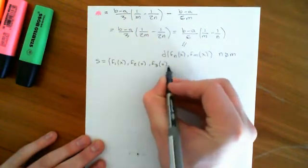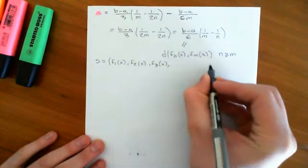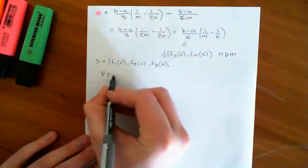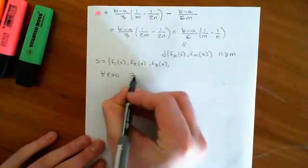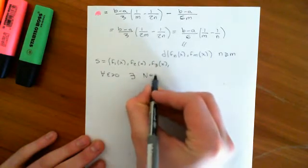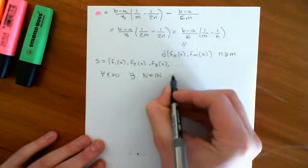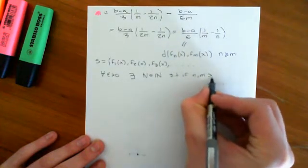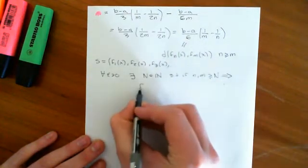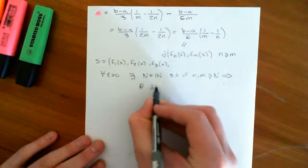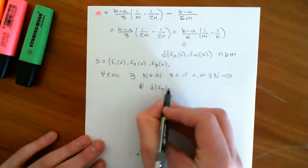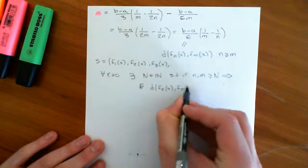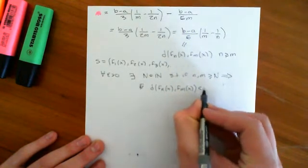which we want to check whether this is a Cauchy sequence, then what we need to do is, for all epsilon greater than 0, there needs to exist a big N, which is an element of the natural numbers, such that if little n and little m are greater than or equal to big N, it implies that the distance between F little n of x and F little m of x is going to be less than epsilon.